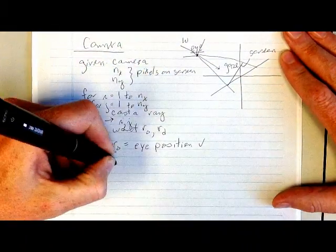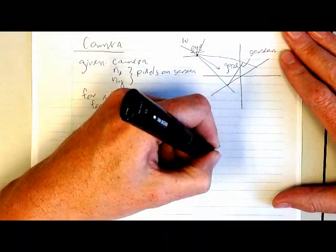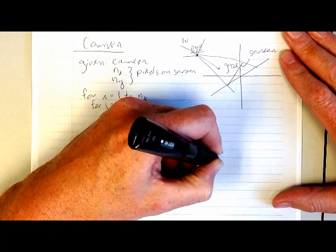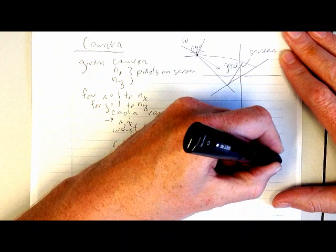And then inside that for loop what we're going to do is cast a ray into the world and see what it hits. Once we know what that ray hits, we can figure out what color to make that pixel.